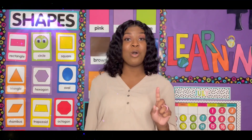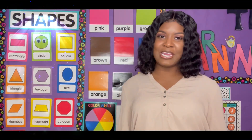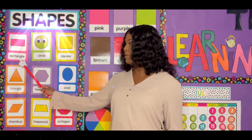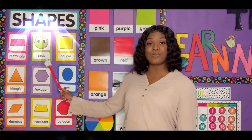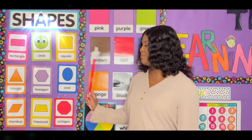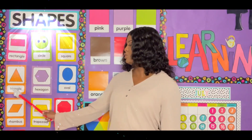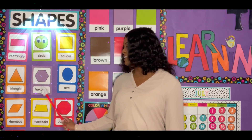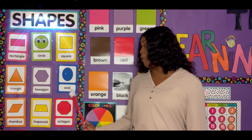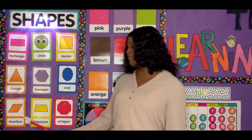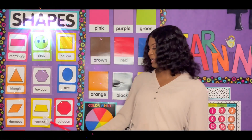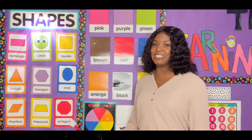Let's go over those one more time. I'd like you to listen and repeat after me again. Rectangle, circle, square, triangle, hexagon, oval, rhombus, trapezoid, and octagon.